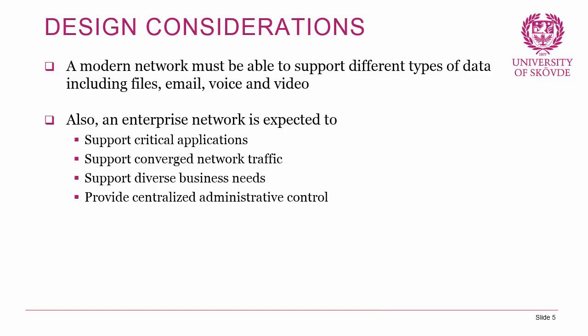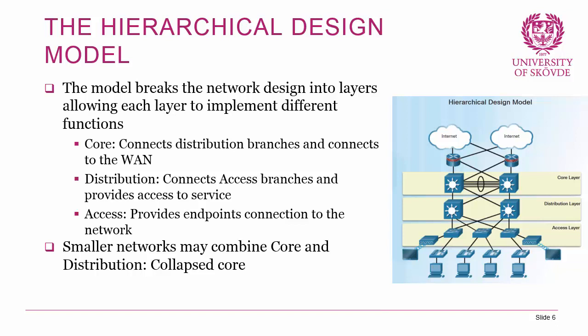The way Cisco tries to achieve this is by building a hierarchical design model — a model for how to design your network in three layers. It breaks down the network into different layers, allowing each layer to implement different functions. The core layer connects all the distribution branches and connects the network to the wide area network like the internet. The distribution layer connects access branches and provides access to services, connecting to your server park, your users, and up to the core layer.